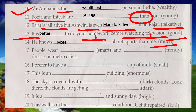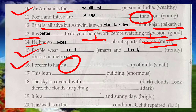'He knows more about sports than me' — comparison between him and me, so we use 'more,' the comparative of 'much.' 'I prefer to have a small...' — 'a' is present, so positive degree is used. 'This is an enormous building' — 'an' is coming, so positive degree 'enormous' is used.